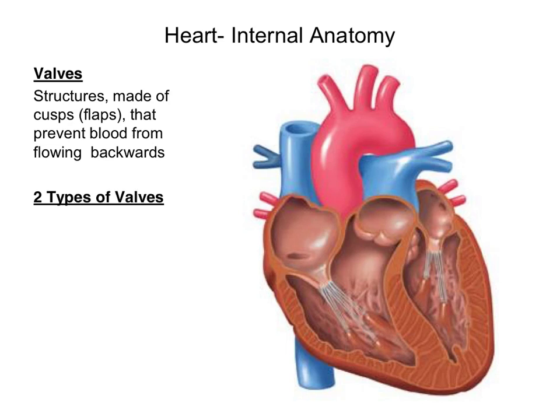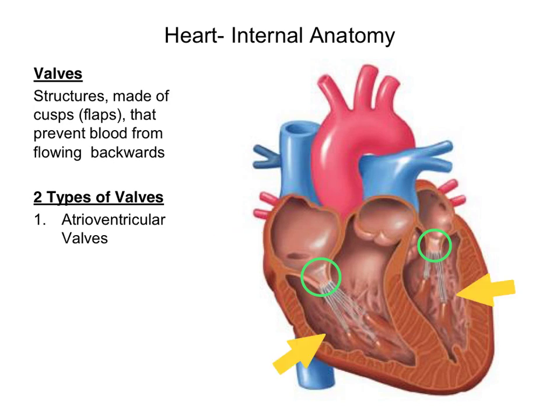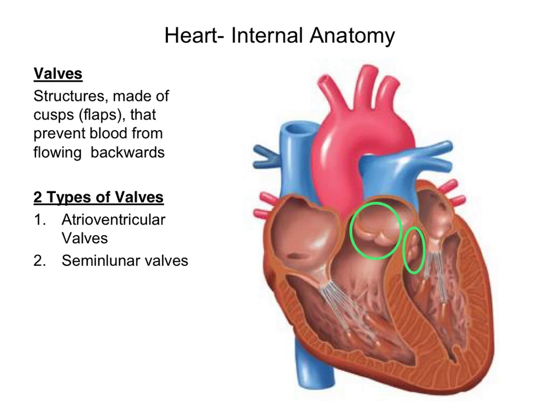There are two types of valves found in the heart. The first set of valves are what we call the atrioventricular valves, which are found between the atria and the ventricles. The second type are what we call semilunar valves, which are found between the ventricles and the major blood vessels that exit the heart, such as the aorta and the pulmonary trunk.